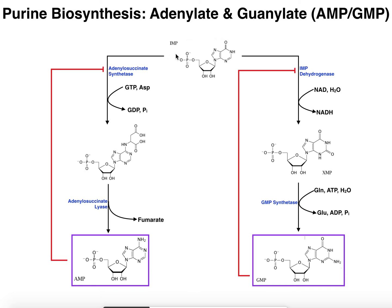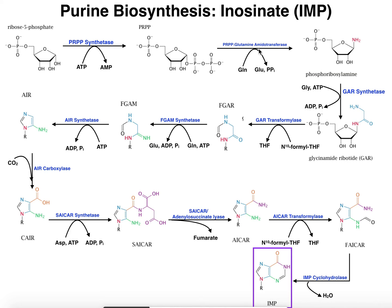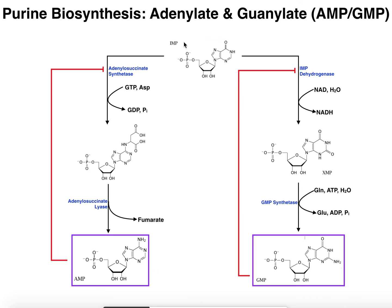That was the purpose of generating IMP in the previous video — we divert it between two separate pathways to get AMP and GMP respectively. Both of these enzymes, adenylosuccinate synthetase and IMP dehydrogenase, are allosteric enzymes. We also had allosteric enzymes in IMP synthesis — PRPP synthetase and PRPP glutaminamidotransferase. These two are allosteric to regulate the balance of AMP and GMP once IMP is formed.